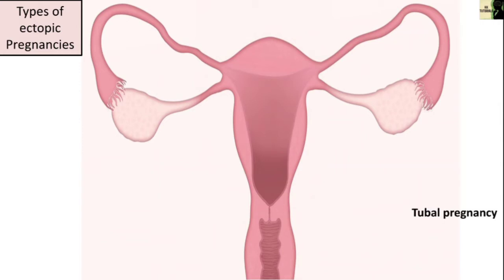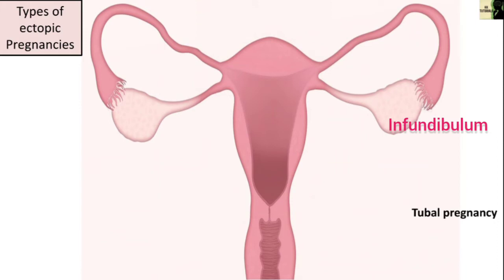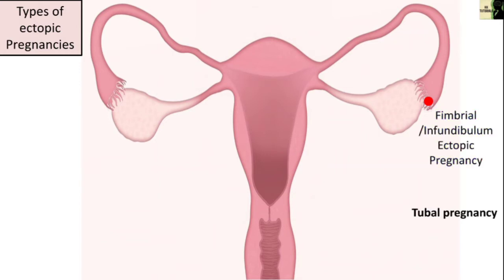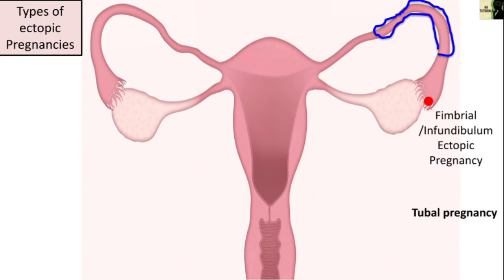The proximal funnel-like part of the fallopian tube is called the infundibulum; it contains finger-like projections called fimbria. When the embryo implants in this region, it is named a fimbrial or infundibular ectopic pregnancy. This type is rare, occurring in only 5 percent of cases. Another tubal pregnancy occurs when the embryo implants in the ampullary region of the fallopian tube, termed an ampullary ectopic pregnancy.